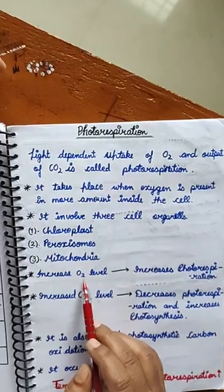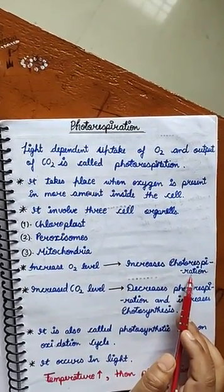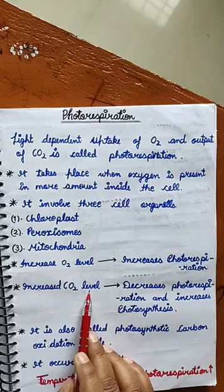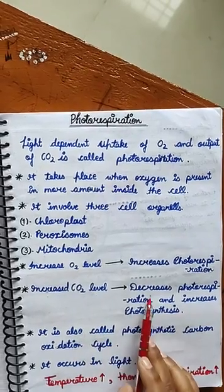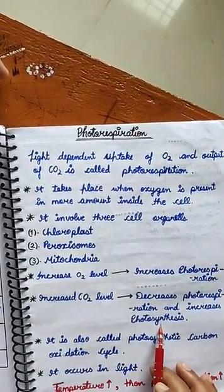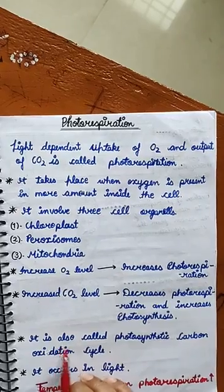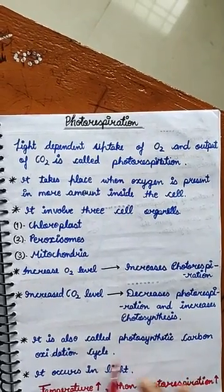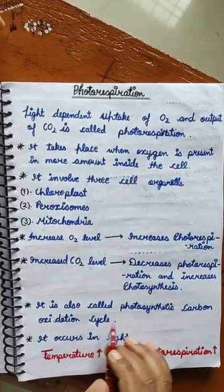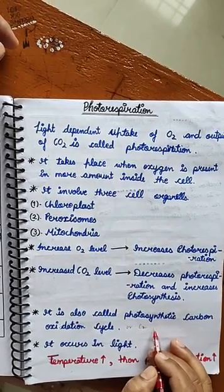When oxygen level increases, then photorespiration increases. If CO2 level increases, then photorespiration decreases and photosynthesis increases. This process is also called photosynthetic carbon oxidation cycle or C2 cycle.